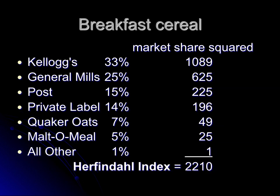So we take 33 squared and get 1,089; 25 squared gives 625. We do that with each of the other companies. We get all of our squared values and then simply add those up: 1,089 plus 625 plus 225 plus 196 plus 49 plus 25 plus 1, and that gives us a Herfindahl Index of 2,210.